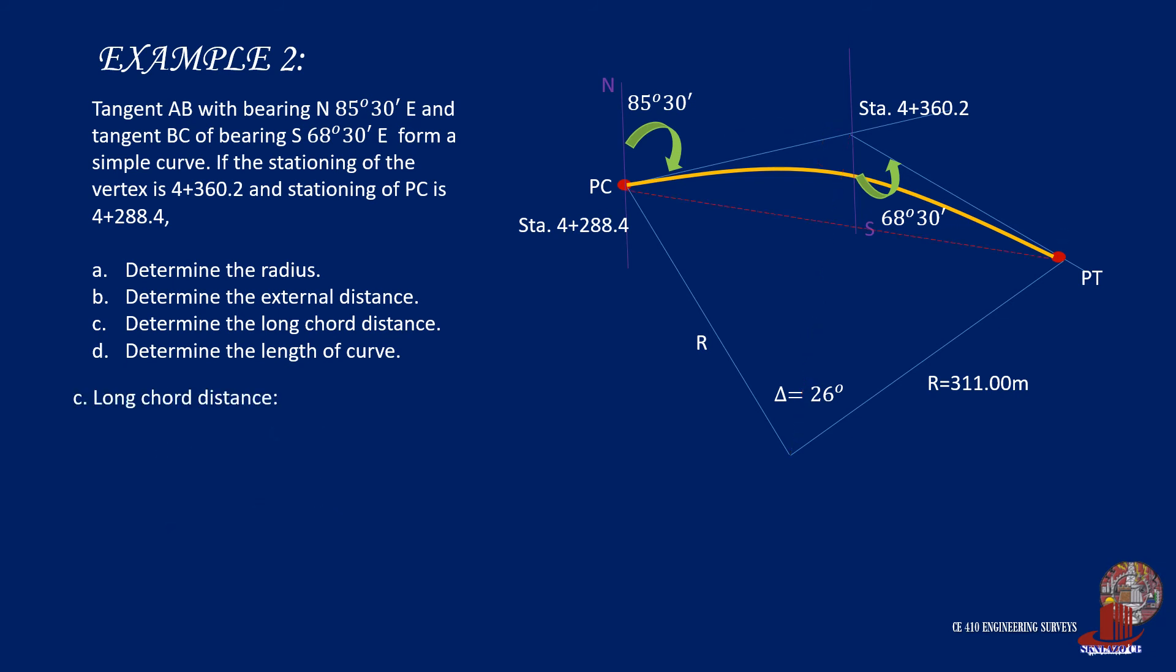The long chord of the curve has the same computation using R and delta. By simply plugging them into the equation, the long chord is solved as 139.92 meters.